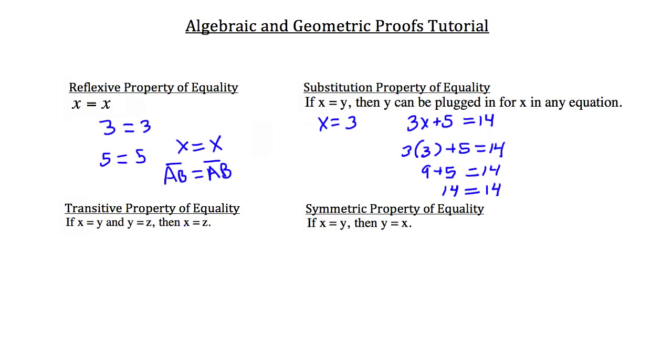Take a look at the transitive property of equality. If x equals y, and y equals z, then x equals z. This actually reminds me of the law of syllogism in geometry. So if x equals 3, and y equals 3, and z equals 3, then not only would x equal y, but x would also equal z because of the transitive property of equality.